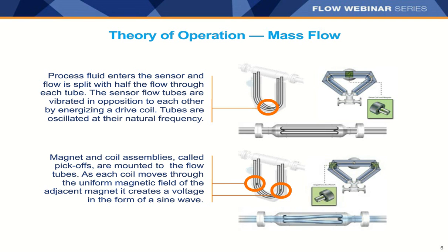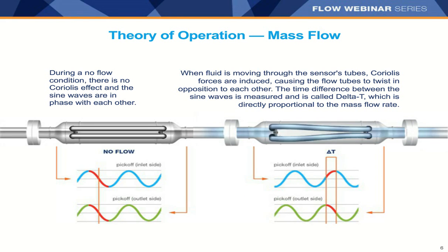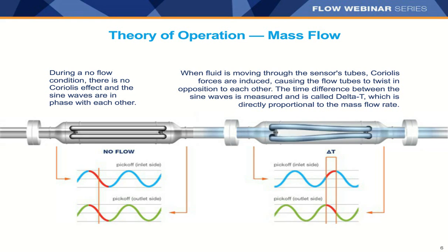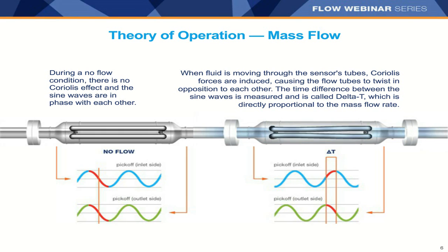On each side of the tubes are pickoff coils, mounted on both sides. Each pickoff coil moves through a uniform magnetic field adjacent to another magnet, which creates voltage in the form of a sine wave. With no flow conditions, there's no Coriolis effect and the sine waves are in phase. When fluid is moving through the sensor tubes, Coriolis forces are induced causing the flow tubes to twist. The time delay between the sine waves — called Delta T — is directly proportional to the mass flow rate.